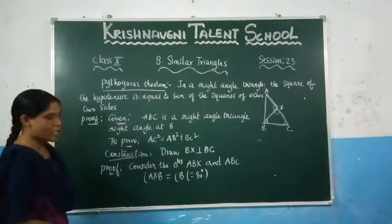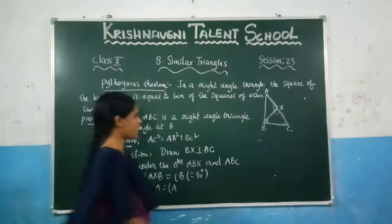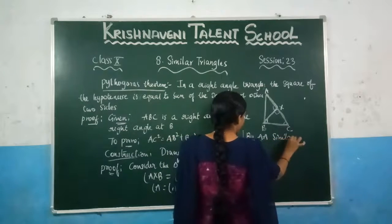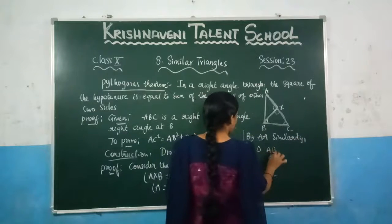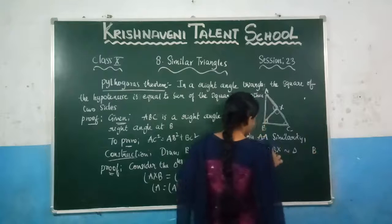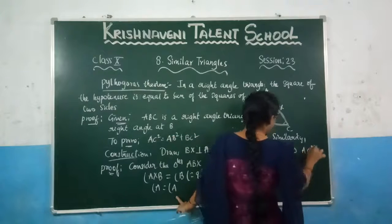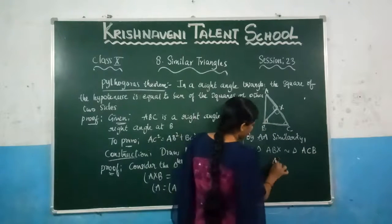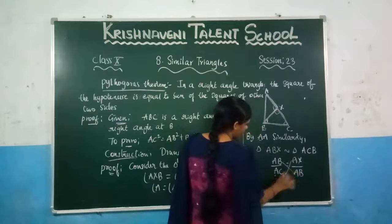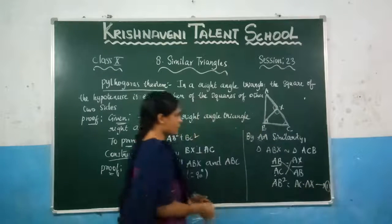In both triangles, angle A is the common angle, so angle A equals angle A. By angle-angle similarity, triangle ABX is similar to triangle ACB. From the corresponding sides: AB over AC equals AX over AB. Cross-multiplying: AB squared equals AC into AX. Let us consider this as equation 1.